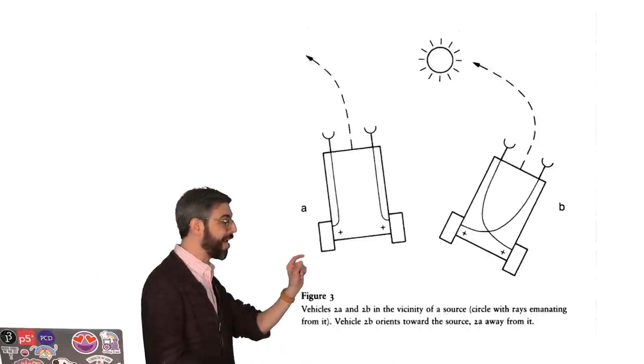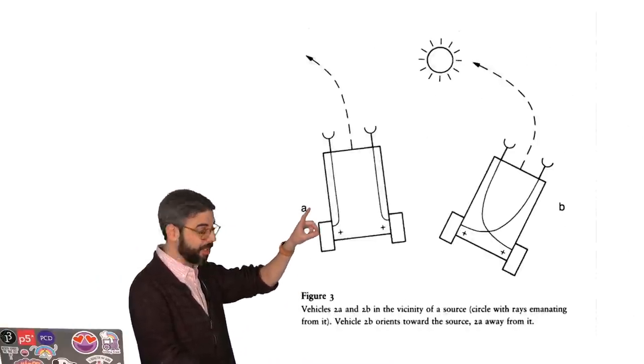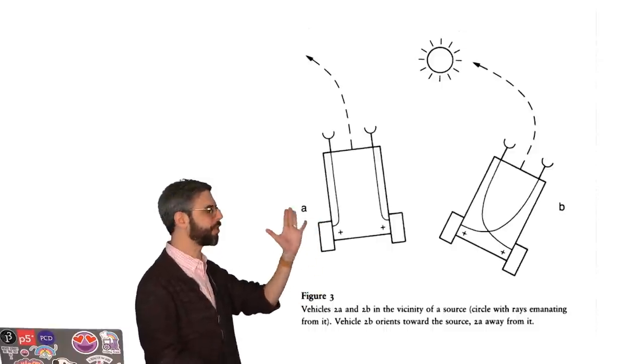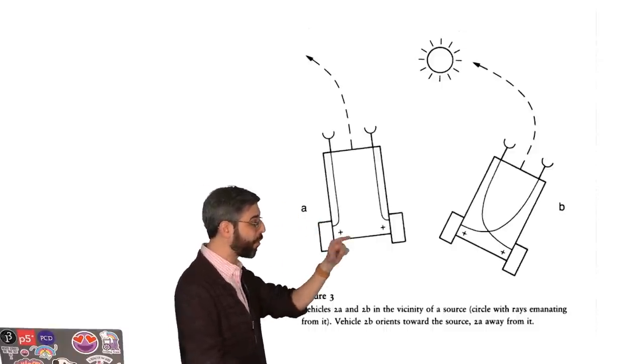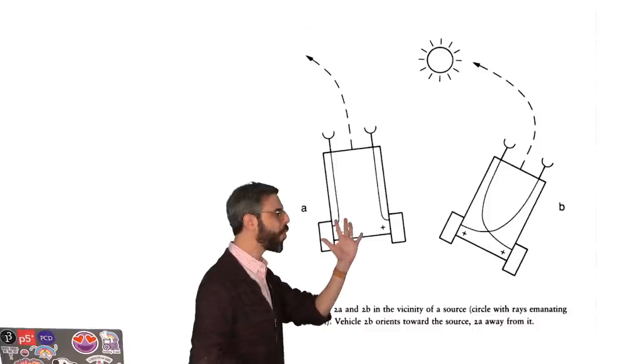Take this example of these two Breitenberg vehicles. The one on the left, A, has sensors to detect a light source and always steers away from that light source, while the one on the right, B, always steers towards that light source.